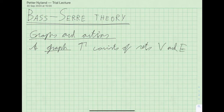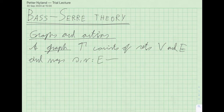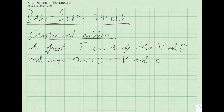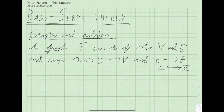The graph also comes with maps S and R, the source and range maps, giving us the source and range vertex of an edge. We want these graphs to be undirected, but with the possibility of choosing an orientation. This means we assume there is a so-called inversion map on the edges, where an edge E maps to an edge we call E-bar, and E-bar is never equal to E.